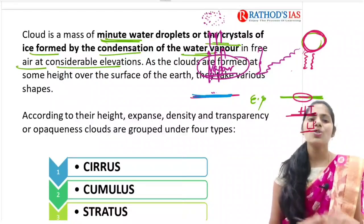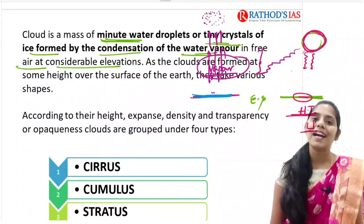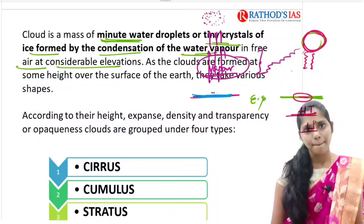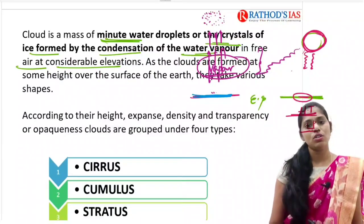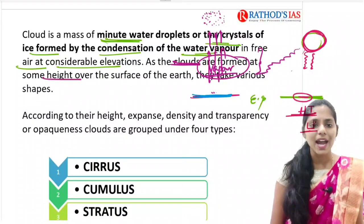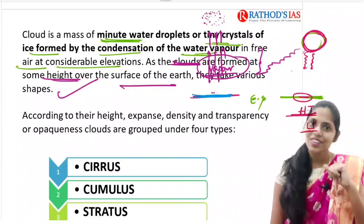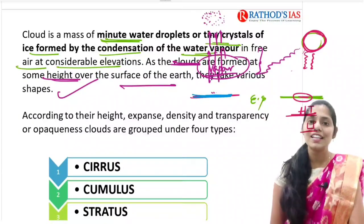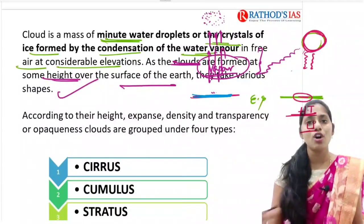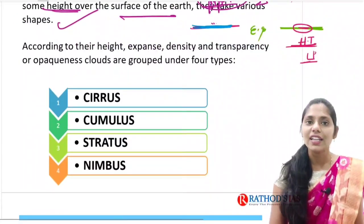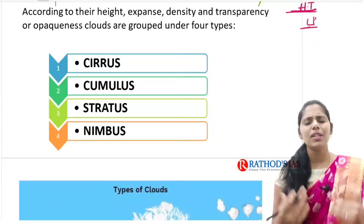A cloud is a mass of minute water droplets or crystals of ice formed by condensation of water vapor in free air at some elevation above the surface of the earth. Clouds take several shapes because winds move not only at the surface but also at different layers of the atmosphere. Based on different altitudes, different shapes of clouds form. According to their height, expanse, density, transparency, or opaqueness, we can see different types of clouds.